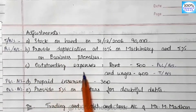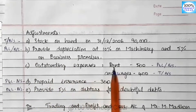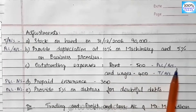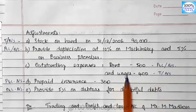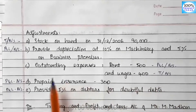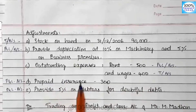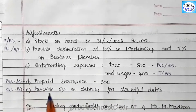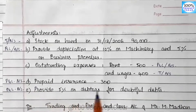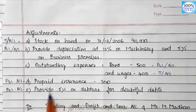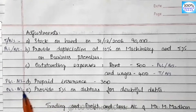Outstanding expenses: the rent amount goes to P&L and Balance Sheet. Wages goes to Trading and Balance Sheet. Next, prepaid insurance goes to P&L and Balance Sheet. And provision for doubtful debts goes to P&L and Balance Sheet.